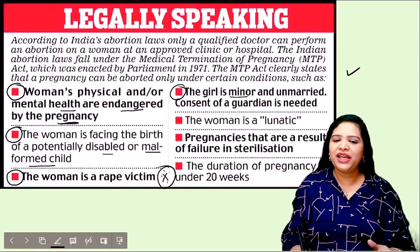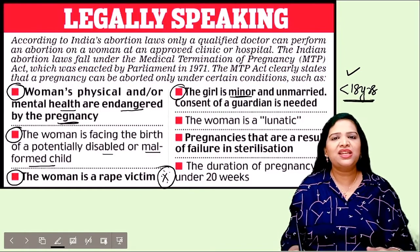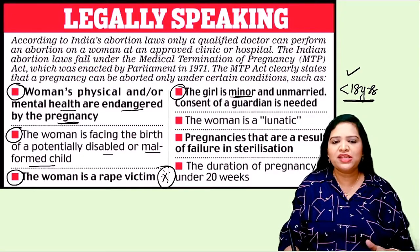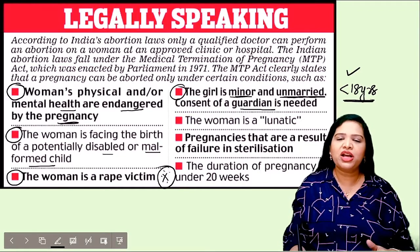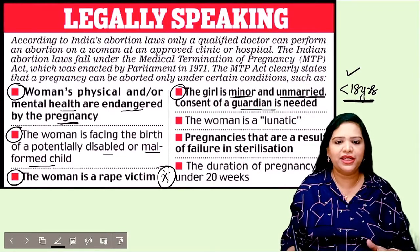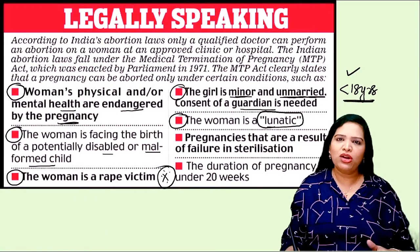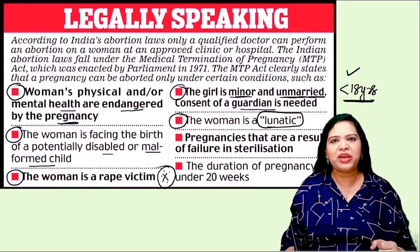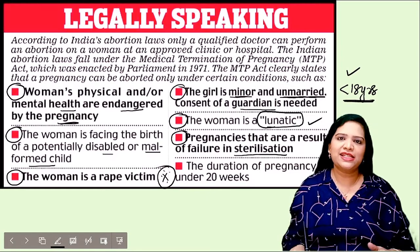If the girl is a minor, less than 18 years, and by any reason — by rape or something — she gets conceived, if she is a minor and unmarried and with proper consent from a guardian, MTPs can be done. Or if the woman is a lunatic — mentally not stable — somebody might have raped her. Such conditions are approved, or pregnancies that are a result of failure in sterilization.